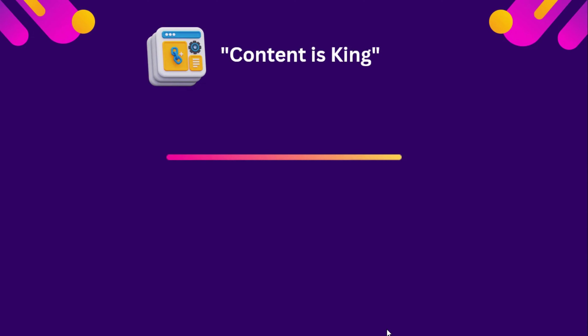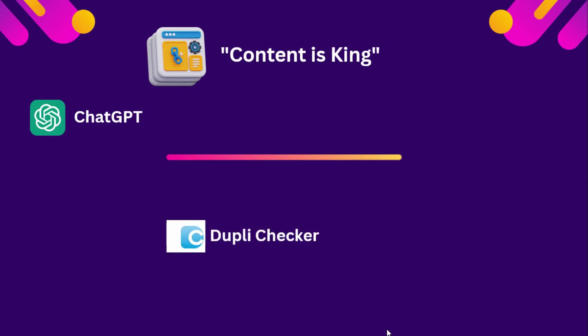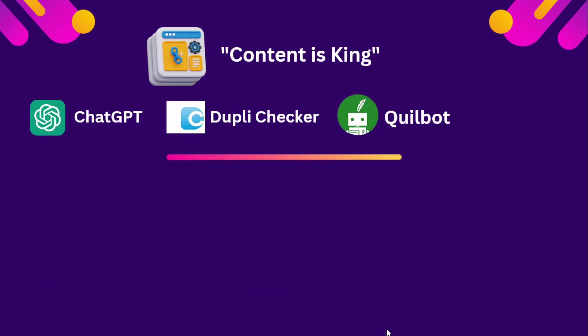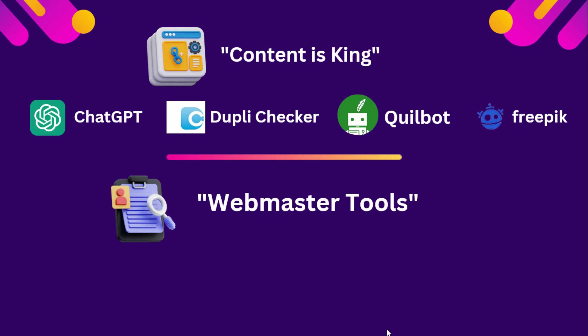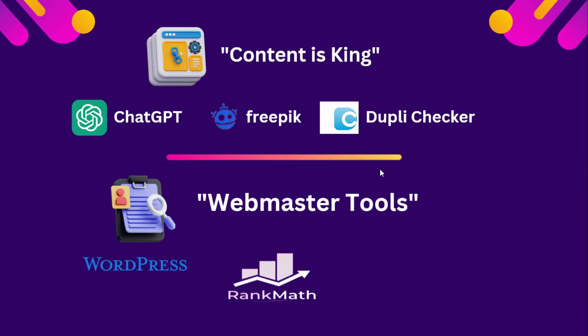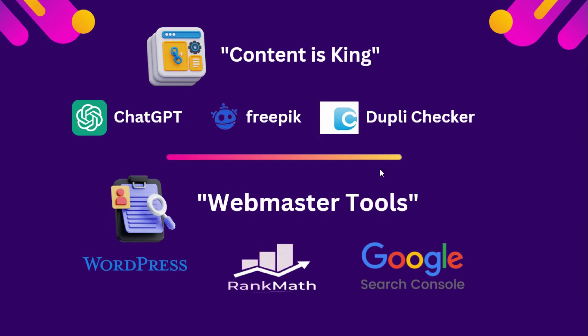To start working on SEO, we begin with content — content is king. We'll use ChatGPT, Duplichecker, Quillbot, and Freepik. Since we're doing SEO for a WordPress website, we'll use the Rank Math plugin and later submit to Google Search Console for crawling.